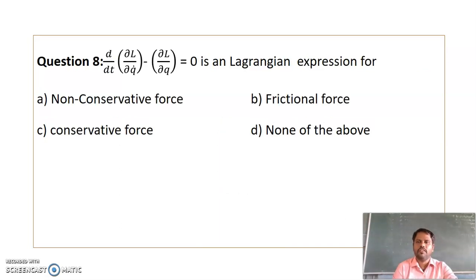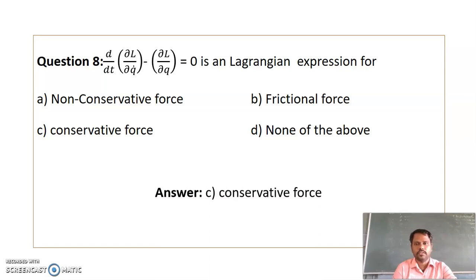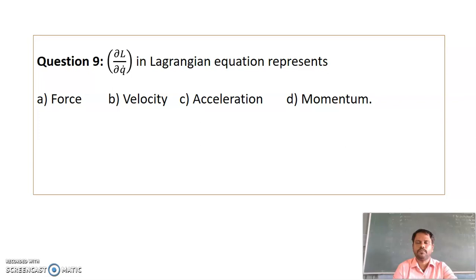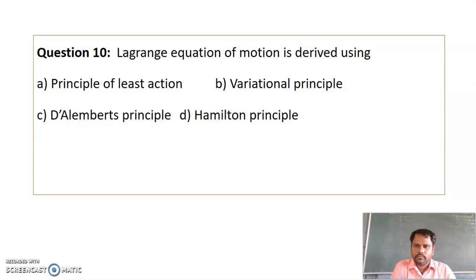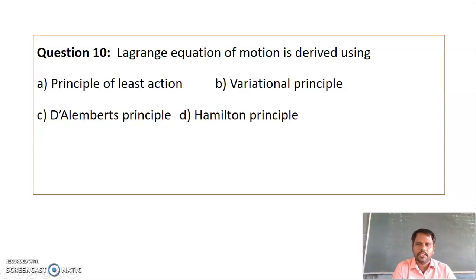Question 8: d/dt of (∂L/∂Q dot) minus ∂L/∂Q equals 0 — is this a Lagrangian expression for conservative forces only? Yes, this expression is for conservative forces only, so the answer is option C. Question 9: ∂L/∂Q dot in the Lagrangian equation represents the generalized momentum, so the answer is option D. Question 10: The Lagrangian equation of motion is derived using D'Alembert's principle, so the answer is option C.